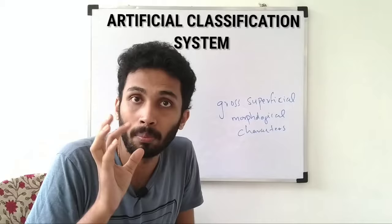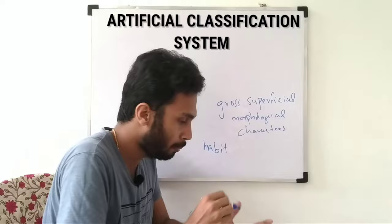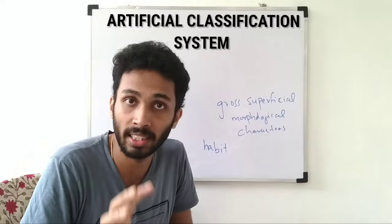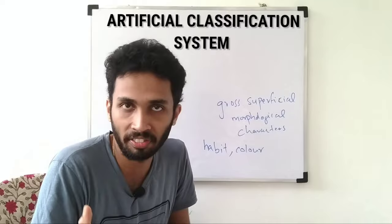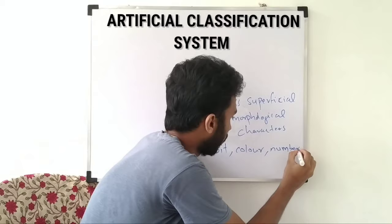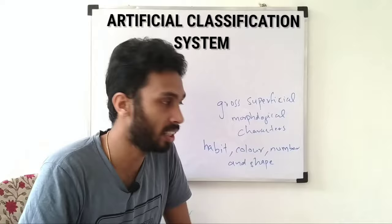The main characters considered are: habit, color, and number and shape of leaves. Habit refers to the life form of a plant. Color refers to the color of the plant, leaf, or flower. Number and shape of leaves refers to how many leaves and what shape they are.